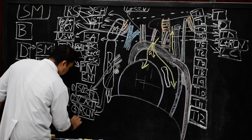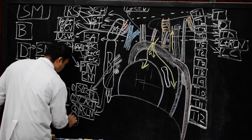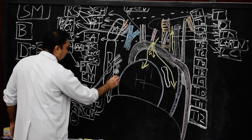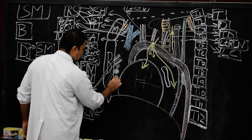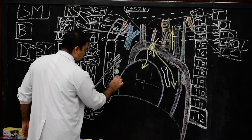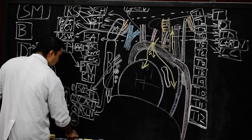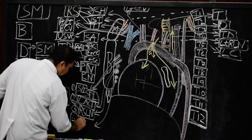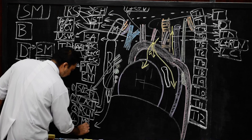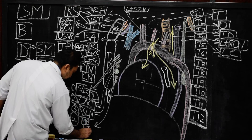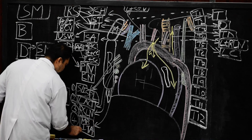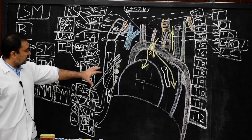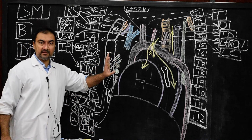Structure number four, which we mark as the mediastinal branches of internal thoracic artery. These are the four structures included in the anterior mediastinum.